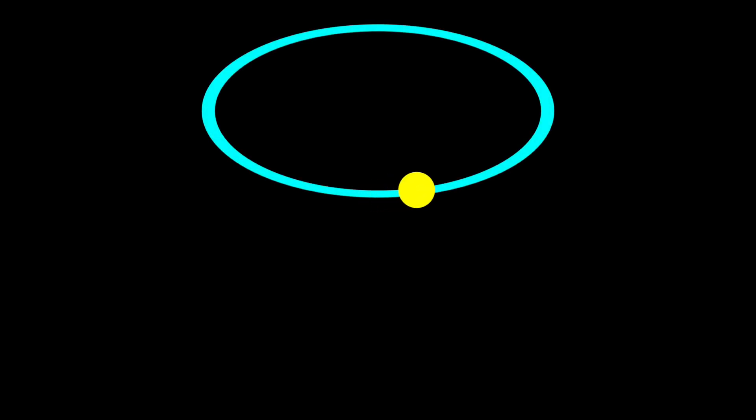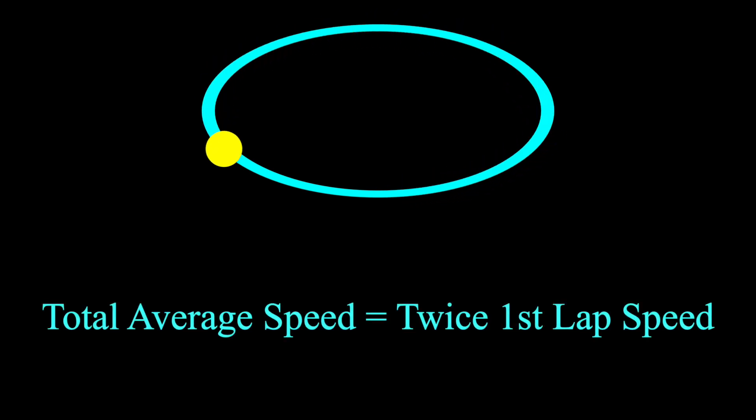You're running around a track. Two laps to be precise. The first lap, take it as slow as you like. The question is, how fast do you have to run during the second lap so that your total overall average speed is equal to twice the speed of your first lap?